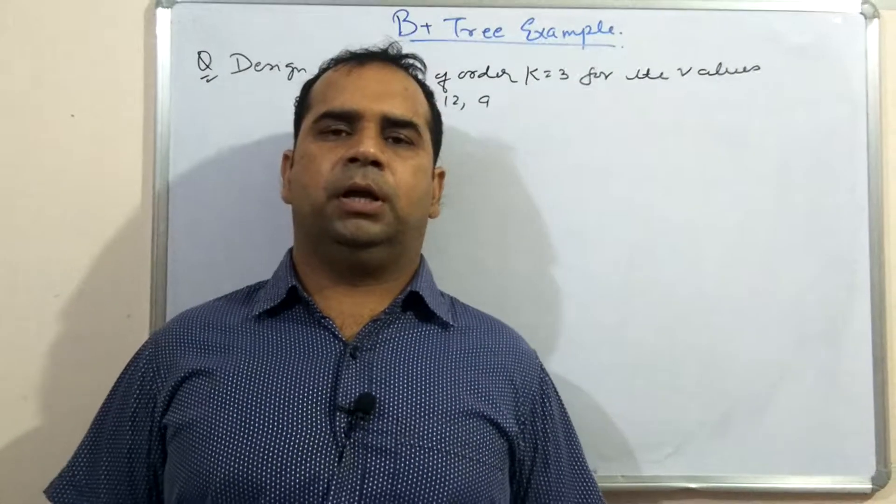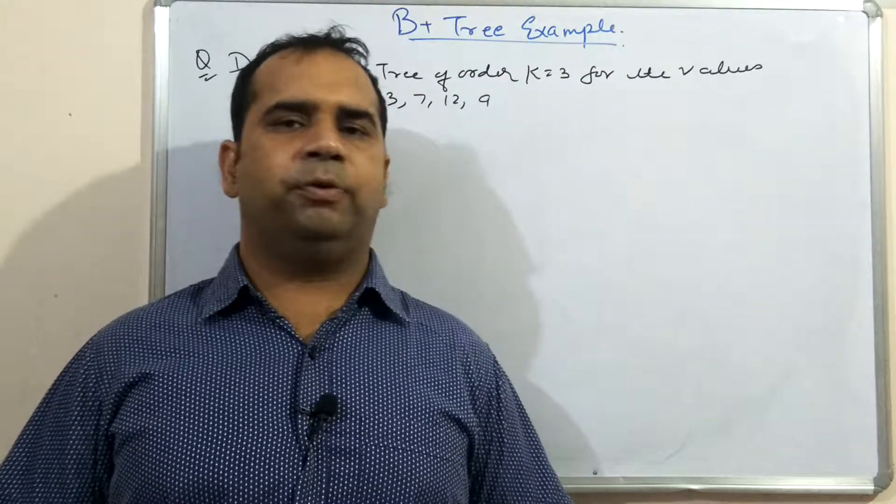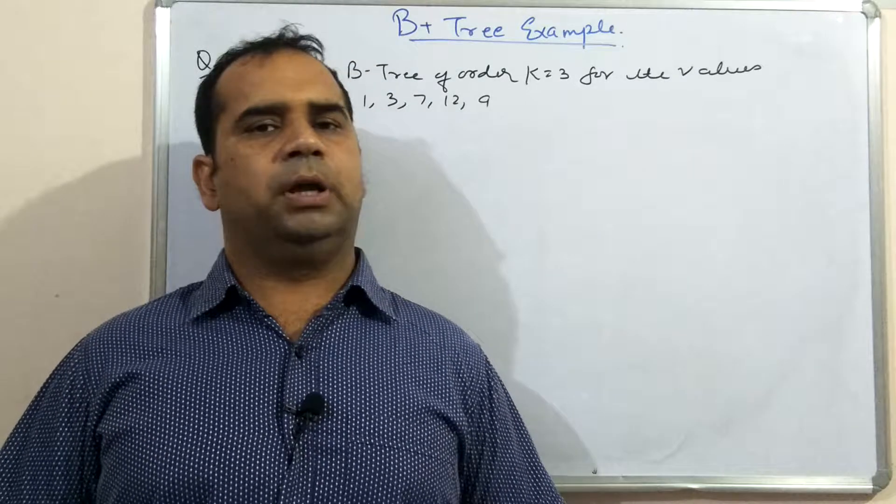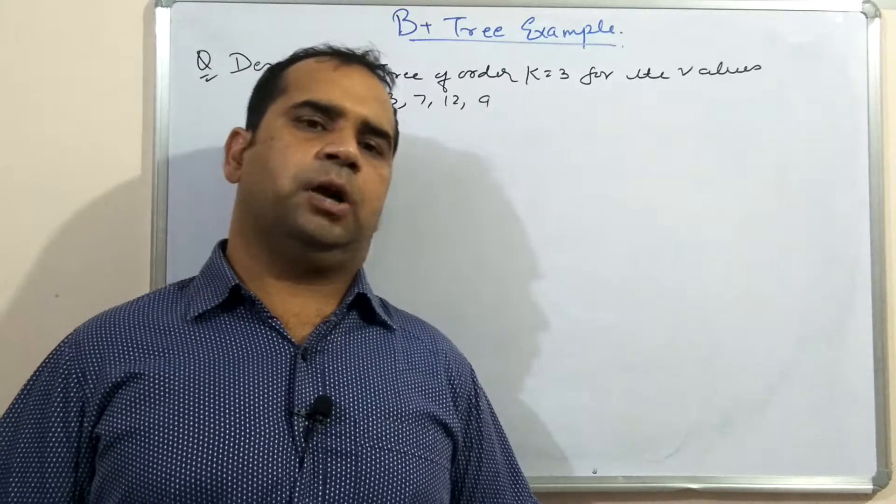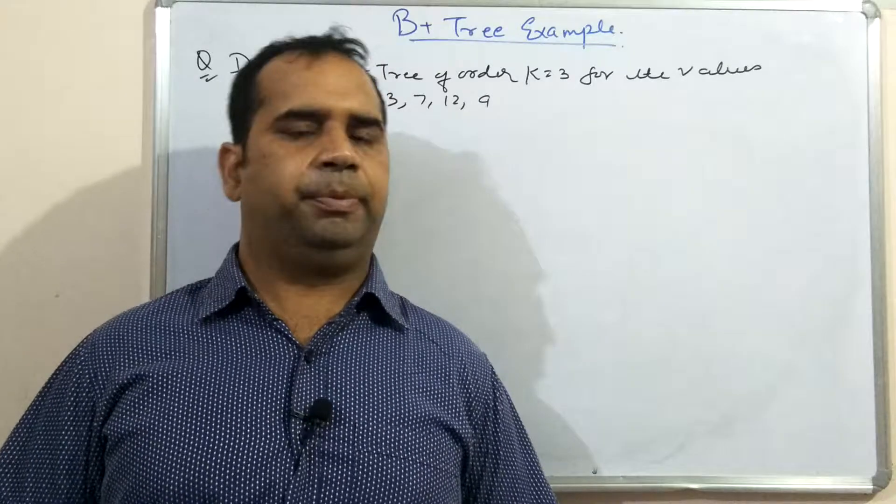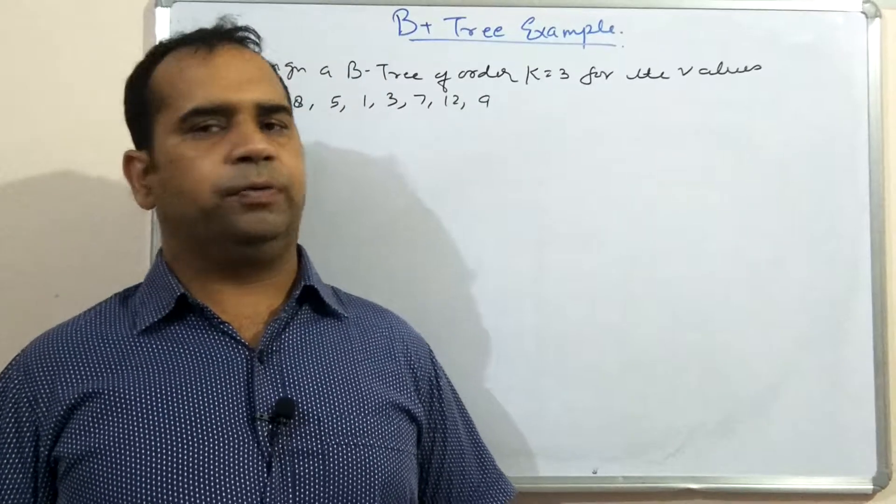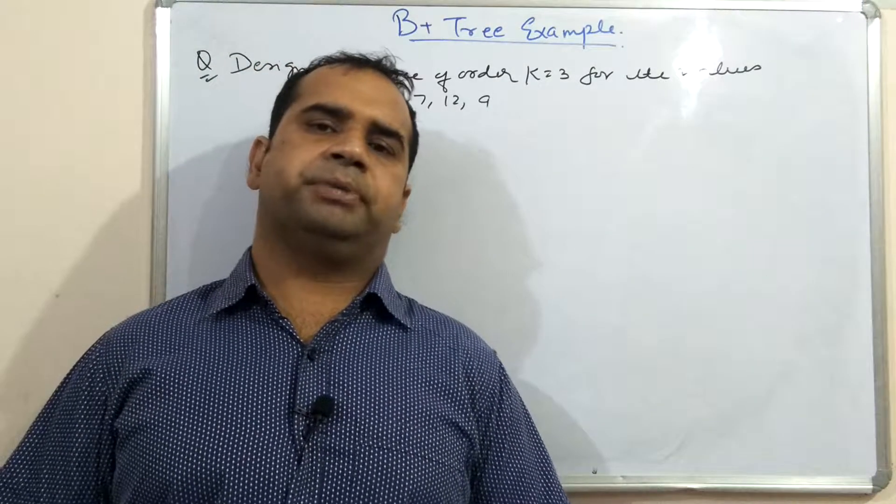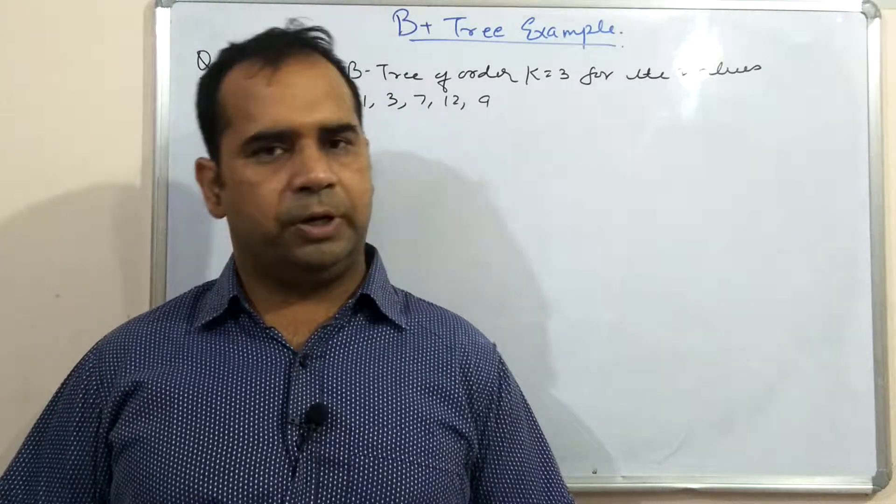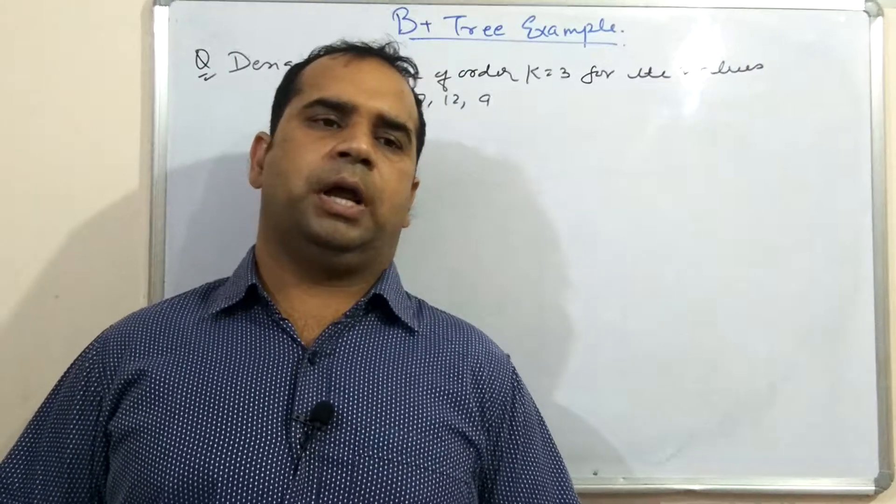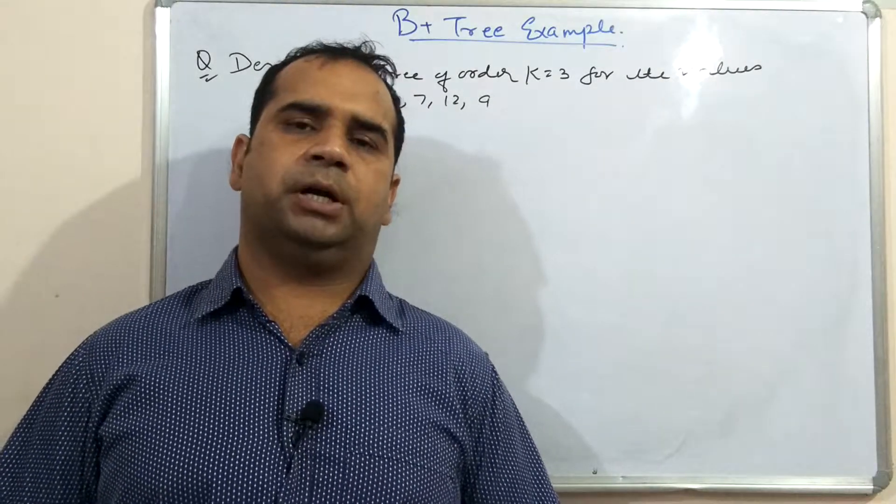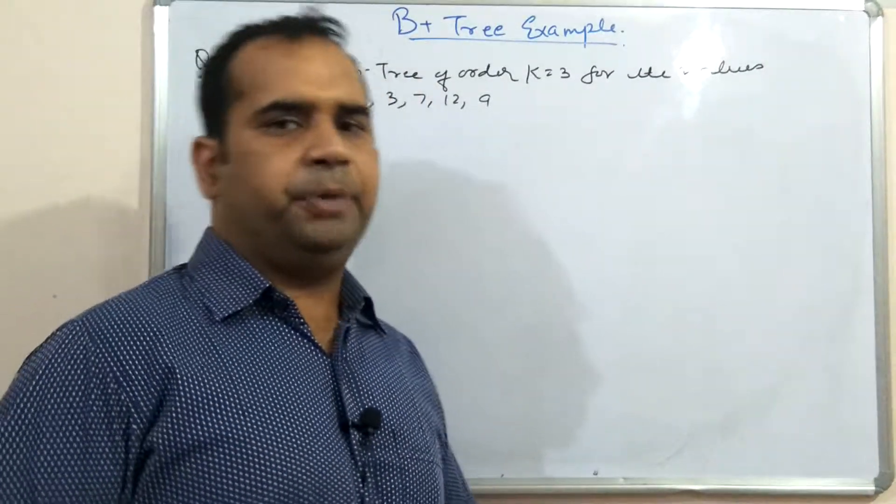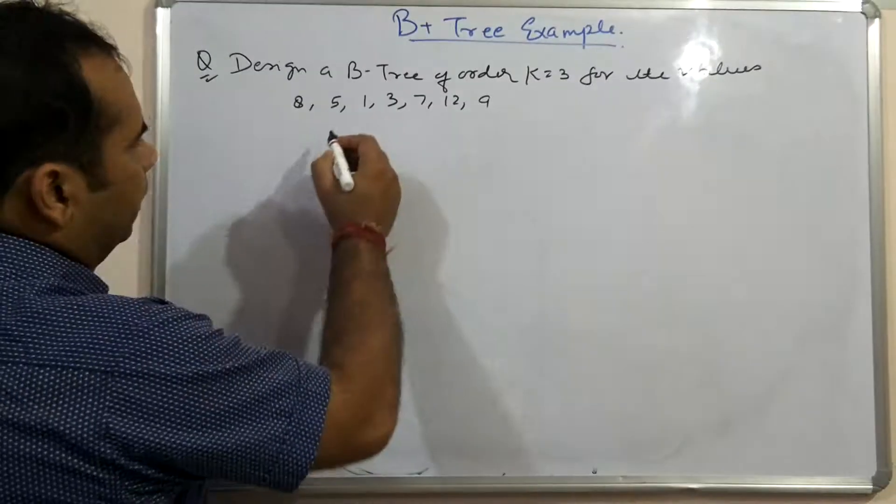Welcome to netforum and today we will discuss an example of B+ tree which will help you in getting the idea that how to insert elements in a B+ tree having an order of k equal to 3. K equal to 3 means that maximum number of values which can be inserted in a node are 2 and maximum number of child pointers are 3.